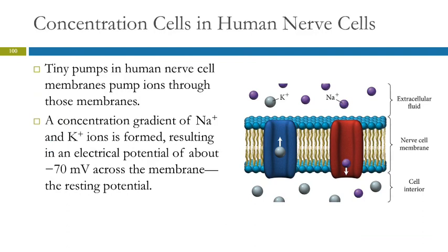Now we're going to talk about two inset topics. I'm not going to test you on these, but I think it's good to see how electrochemistry applies to other things. In your nerve cells, there are concentration cells and there is electrochemistry going on. There are tiny little pumps in the membranes of human nerve cells that pump ions through the membrane.